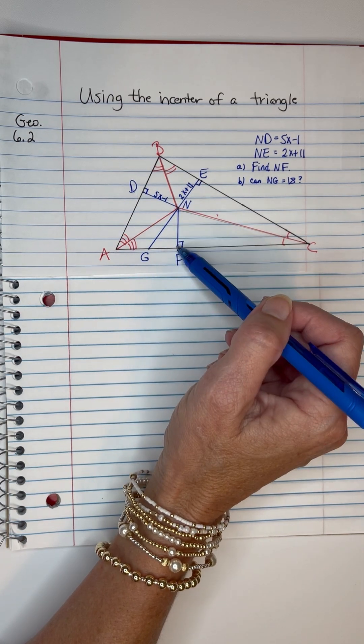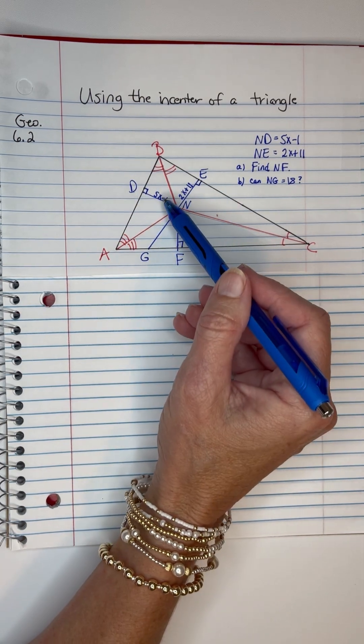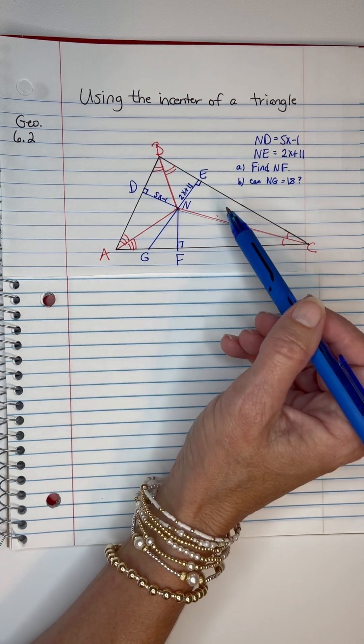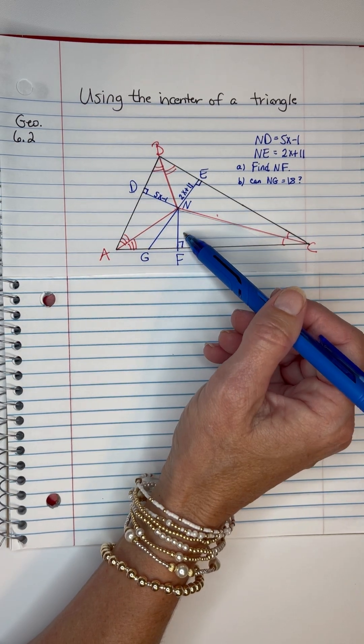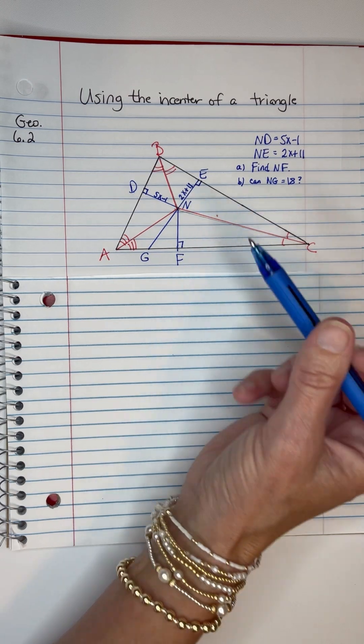So NE, ND, and NF are the same size. And I'm told what ND and NF is. So I'm going to set them equal to each other to solve it to figure out what NF will be. And then they're going to ask me a question about NG.